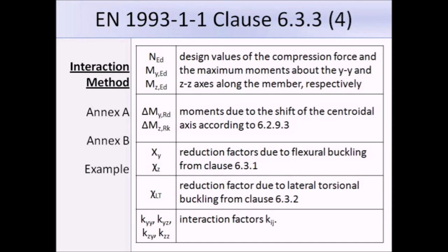CHIY and CHIZ are reduction factors due to flexural buckling from Clause 6.3.1, and CHILT is a reduction factor due to lateral torsional buckling from Clause 6.3.2. For members not affected by lateral torsional buckling, this value can be taken as 1, and I've already mentioned the interaction factors.